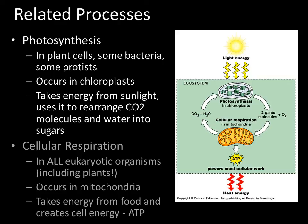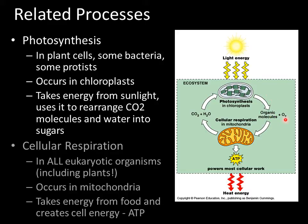Photosynthesis happens in plant cells. It also happens in some bacteria and some protists, like green algae. And as you know, it takes place in the chloroplasts — the organelle chloroplasts in plant cells. What happens is photosynthesis takes light energy from the sun. That light energy comes into the chloroplasts, and also carbon dioxide and water. Plants take in carbon dioxide through their leaves and draw up water through their roots.